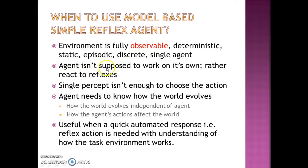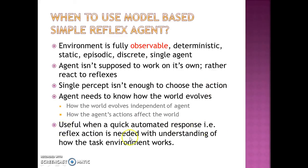Here as well, the agent is not supposed to work on its own; rather, it is supposed to react to reflexes. For every reflex, there will be a predefined action in the condition-action table. If a single percept is not enough to choose the action, one can use the model-based agent architecture. The agent has model information — how the world evolves independent of the agent and how the agent's actions affect the world — so a single percept plus the unseen part of the world given by the model can help decide the action. It is useful when a quick automated reflex action is needed with understanding of how the task environment works.